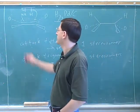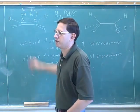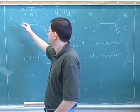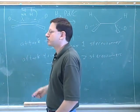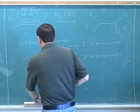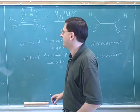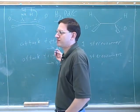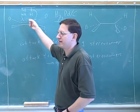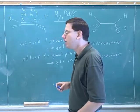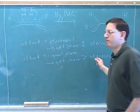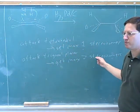How many products do we expect to get here then — one or two? Two. Because this is certainly trigonal planar. And that's going to hold for all the next few reactions, because we're going to keep attacking double bonds, and double bonds are always trigonal planar, so we can generally expect a maximum of two stereoisomers.